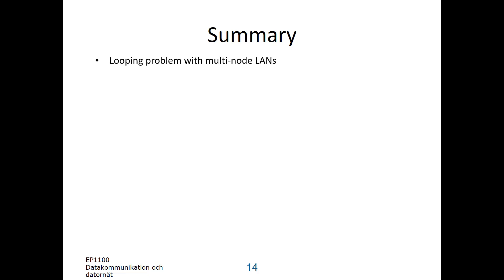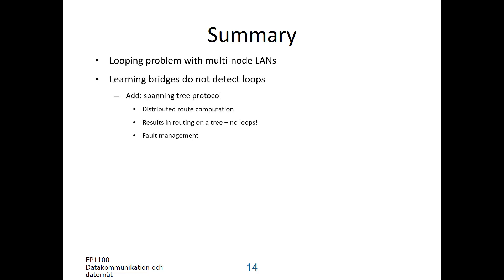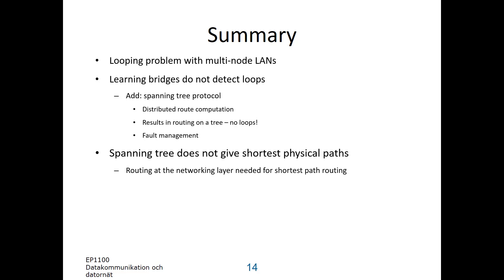In summary, there is a looping problem when you have multiple nodes connecting many different local area networks, and learning bridges do not detect loops. Therefore we add a protocol to the bridges to avoid loops — the spanning tree protocol. It is a distributed route computation resulting in routing that is free of loops. The new topology is a tree, providing connectivity among all computers in the network without any loops. The protocol also includes fault management when links and nodes fail. The spanning tree does not give the shortest physical path between computers; for shortest path routing you have to do that at the network layer, which will be covered in the next module. I also introduced the concept of virtual LAN for ease of management of large extended local area networks.